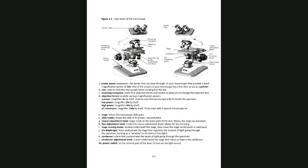The specimen slide is placed on the stage — think of it like watching an opera: the ocular is where you watch, the stage is where the singer performs. The stage has a slide holder to hold and move the slide. The stage can move up and down (north and south) and right and left (east and west) using knobs, plus there's a condenser adjustment knob.